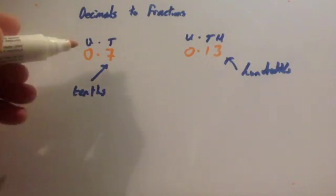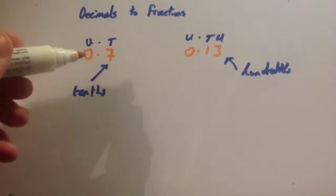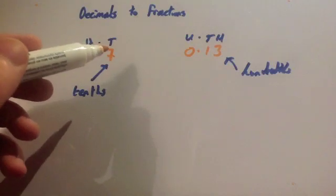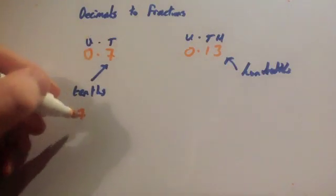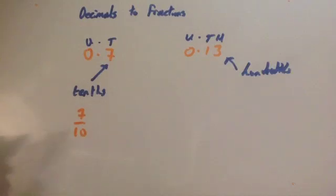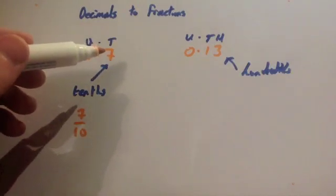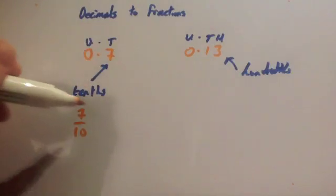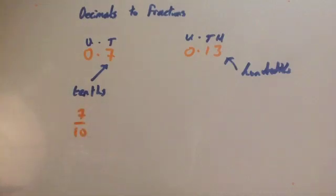OK, so if you wanted to write 0.7 as a fraction, OK, because it's 7 tenths, you write it as 7 tenths, like so. So because they're in the tenths column and you've got 7 of them, you write 7 tenths. You try to cancel this down if possible, I've chosen one that can't be simplified.